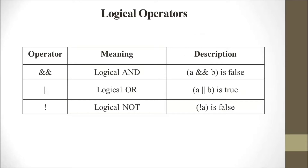Logical operators. Three operators come under logical operators: logical AND, logical OR, and logical NOT. For logical AND, both conditions A and B must be true for the result to be true; otherwise it is false. Logical OR is true when at least one condition is true. Logical NOT is always the inverse.